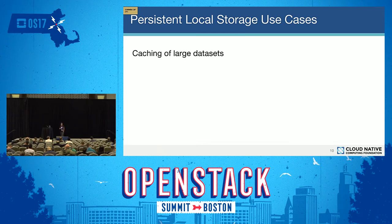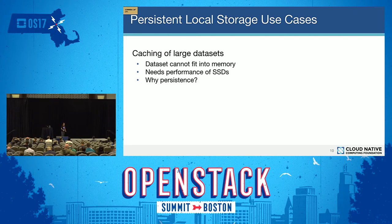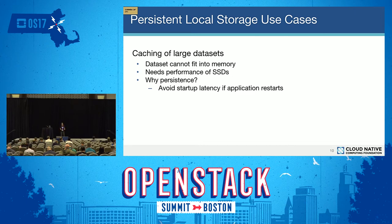An example is caching large data sets, where your data set cannot fit into memory so you have to put it onto disk. This is all about performance, so you really want to access fast SSDs. But why do you need persistence for a cache? Your data set is so large that if you had to reload the cache every time your application crashed or restarted, you'd incur a high startup latency. If you can persist that cache data and the application restarts, it can pick up where it left off and save a lot of startup time.